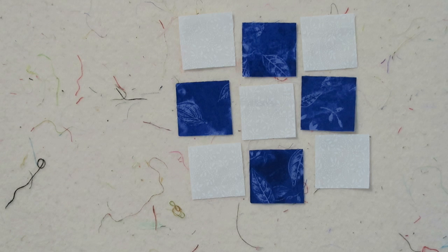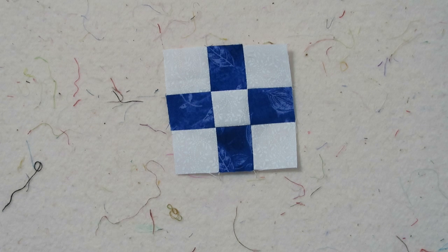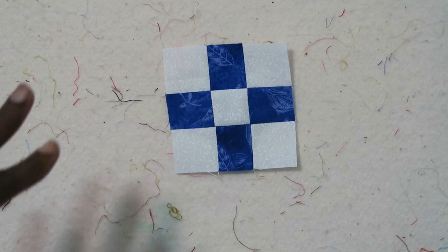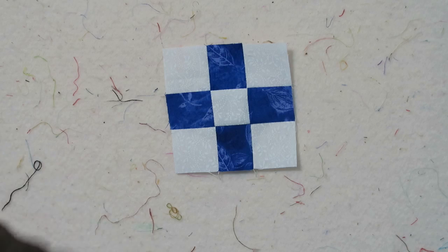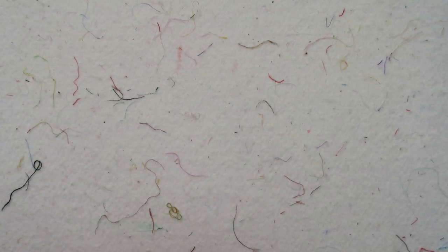The first step is to make a 9-patch with your 1 and a half inch squares. So you're going to align them as shown in the video, and sew them into a block unit. Here is my 9-patch unit. It should finish, after sewing, 3 and a half inches unfinished. So I'm going to move that to the side.